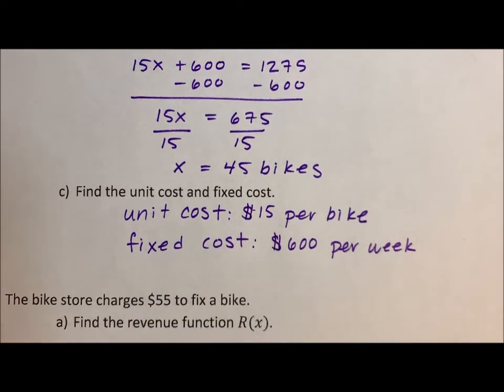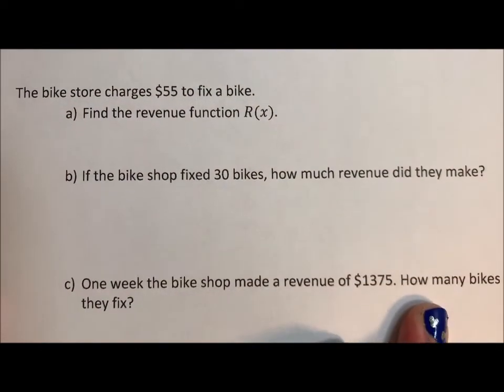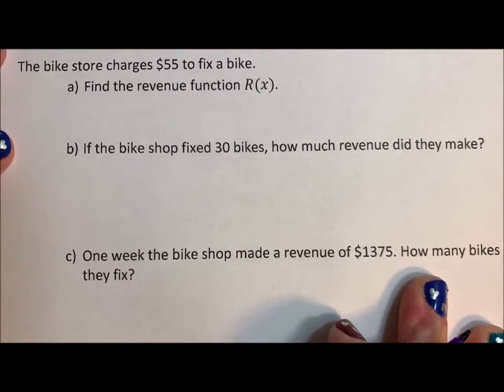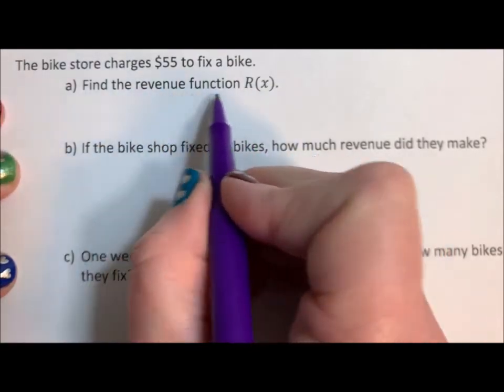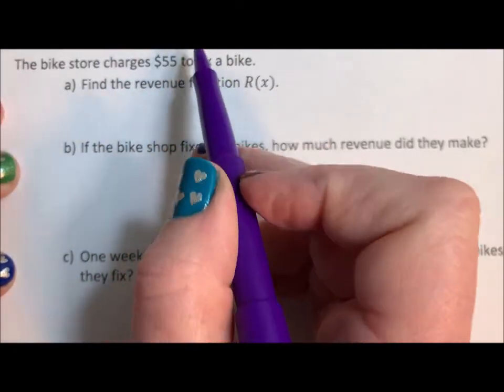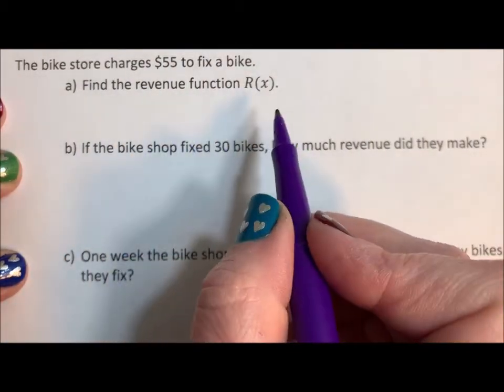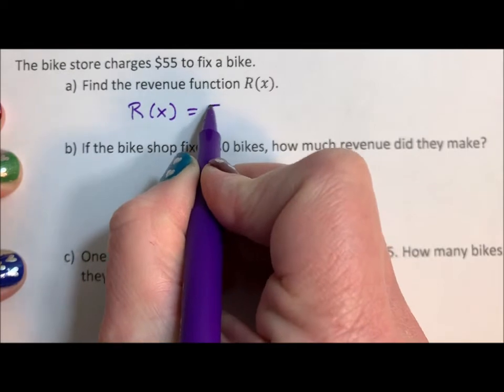The bike store charges $55 to fix a bike. So the revenue function, or find the revenue function. So the costs were the money out, that's what we just figured out. This is the money in. What's the revenue for fixing a bike? Well, the revenue is 55x.